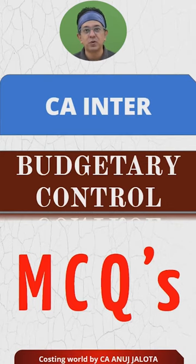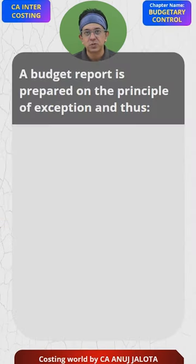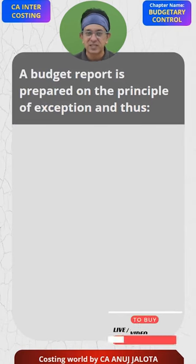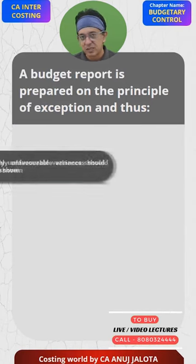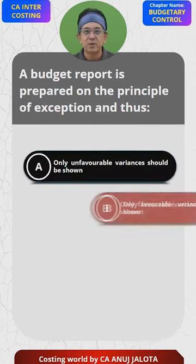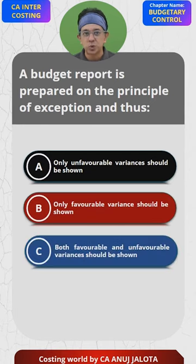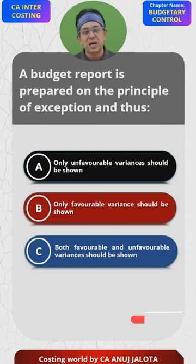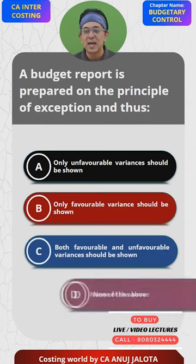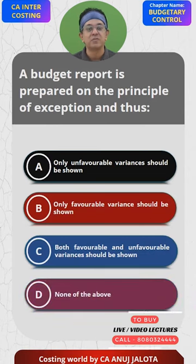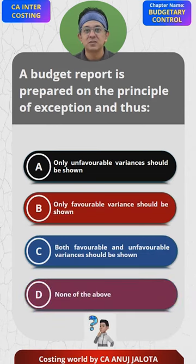Budgetary control MCQs: A budget report is prepared on the principle of exception, and thus only — which variances should be shown? Only unfavorable variances should be shown, only favorable variances should be shown, both favorable and unfavorable variances should be shown, or none of the above. Think of the answer.